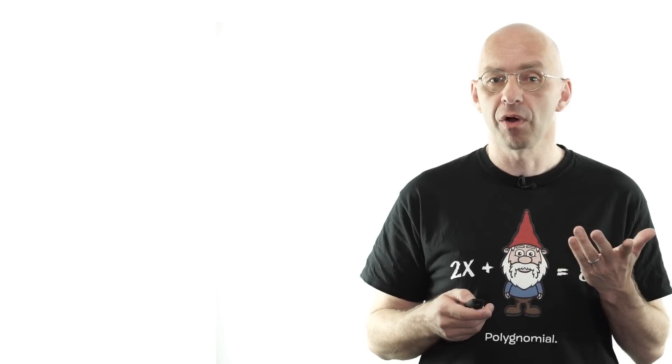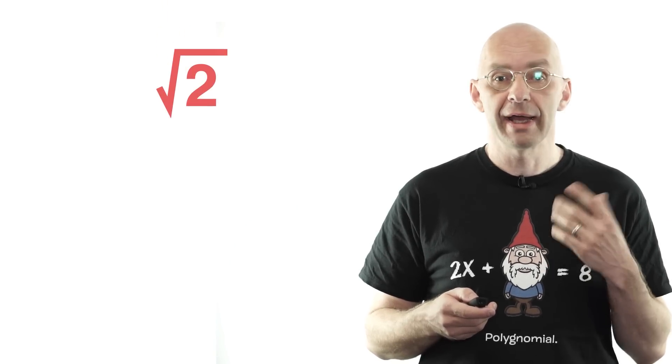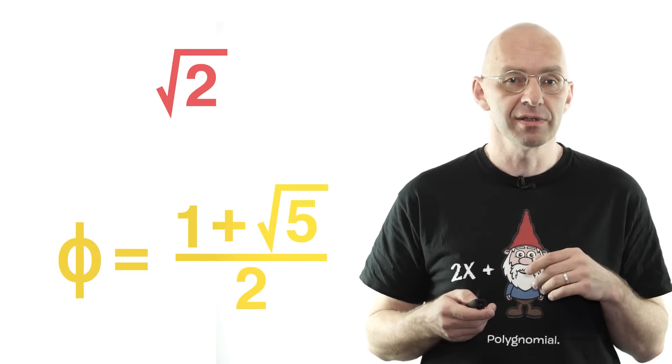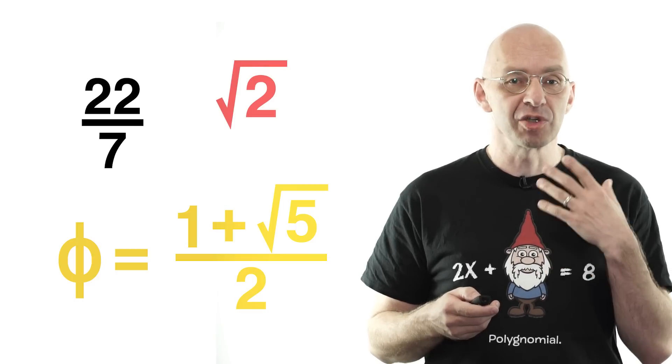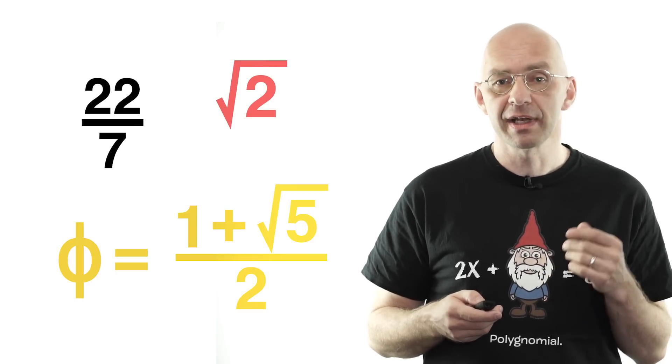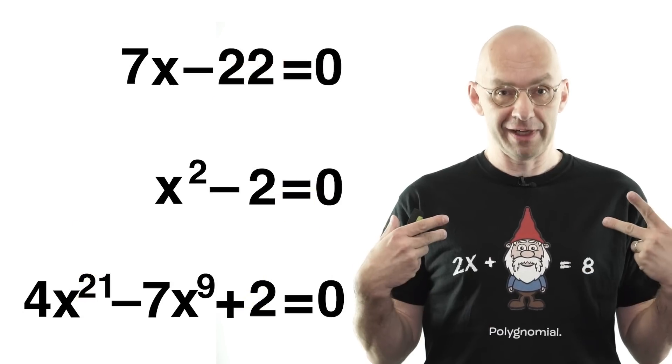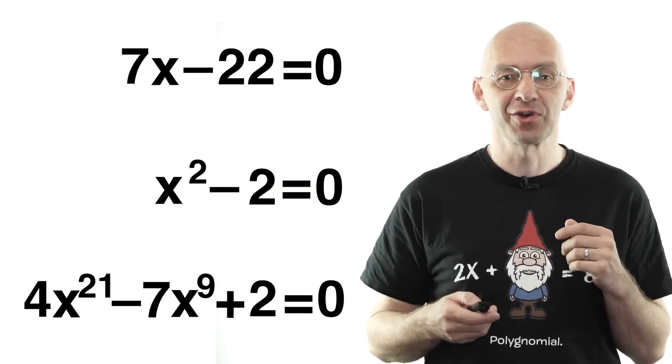But of course you probably all know that root 2 and the golden ratio are irrational numbers. These two irrationals, as well as the fractions, are examples of algebraic numbers. Those are the numbers that come up naturally in algebra as solutions to polynomial equations with integer coefficients.